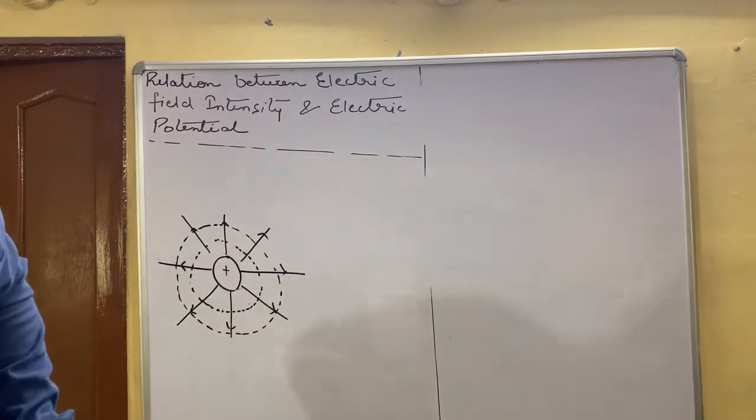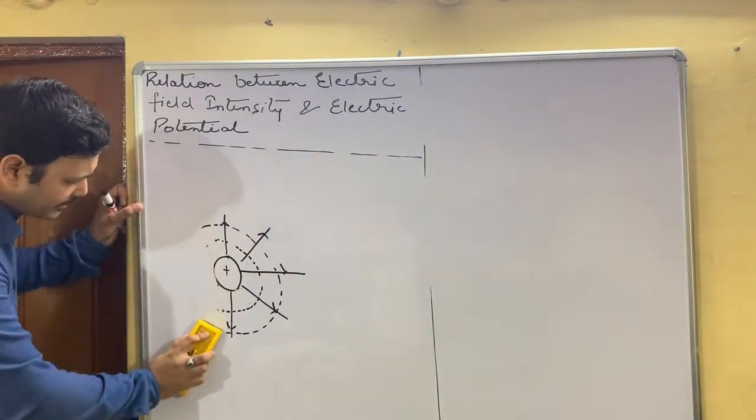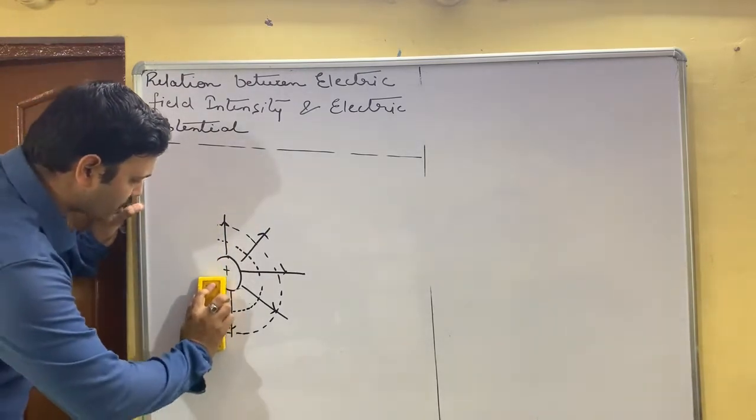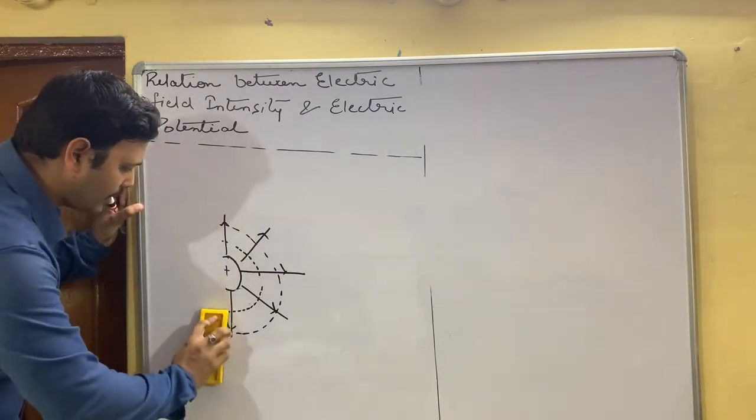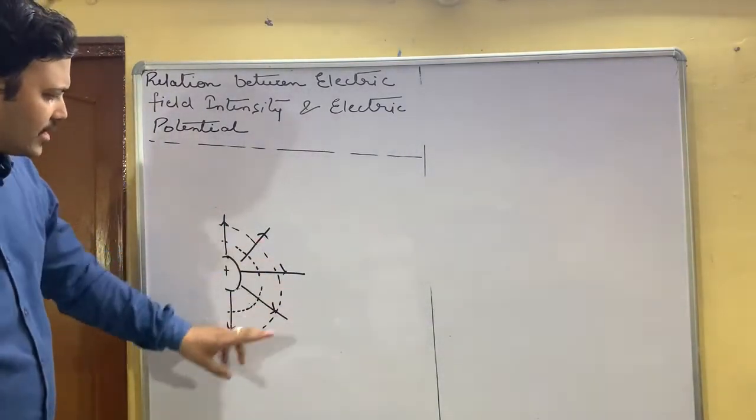Suppose if we just erase the half portion of this diagram, we have erased the half portion of this diagram. So we have this much.